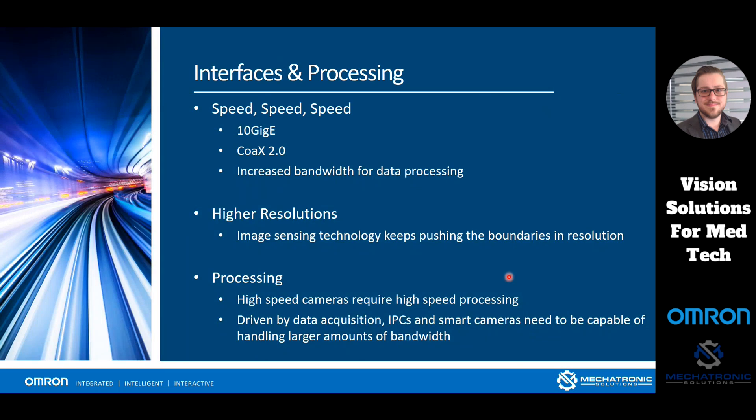Some other trends in machine vision — one of the biggest right now is all about speed. We have multiple new interfaces: 10 GigE, which is 10 times faster than standard GigE Vision, and Coax Express 2.0, which is an incredibly fast interface. All of this is making increased bandwidth for data processing — we have all the speed, but we have to have better data processing to actually utilize it.